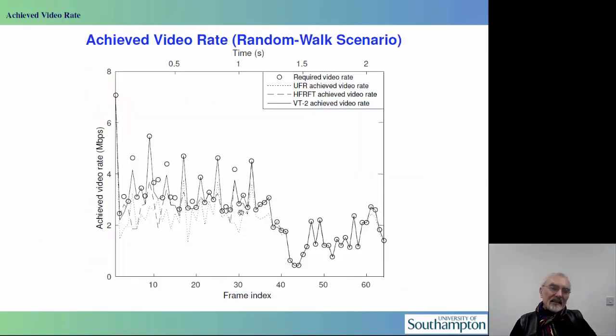In this slide, we view the achieved video rate versus the frame index, and the circles represent the required video rate, which is literally always achieved with the aid of the vectorized transmission, whereas by contrast, the UFR scheme almost always fails to reach the required video rate, and therefore it inflicts an excessive video frame drop in probability.